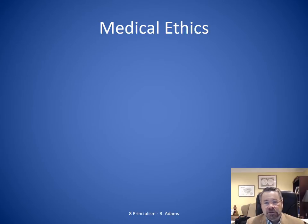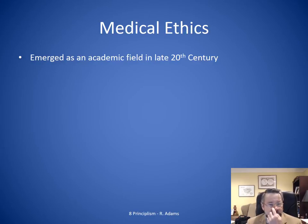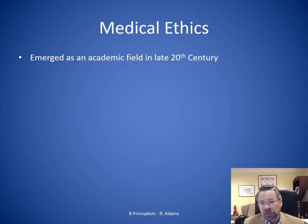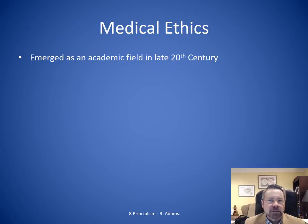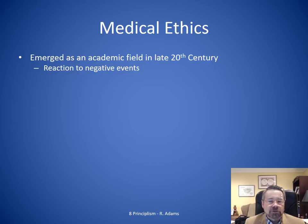Let's talk about medical ethics. This emerged as an academic field late in the 20th century. In the 1970s, John Rawls was starting to write about things. When I was studying in the 1980s, we still didn't have really good names for a lot of the things we talk about today — we called it medical jurisprudence somewhat because we were lawyers looking at it. But it did start to emerge, and it was a reaction to a lot of negative events that had occurred in the early and middle 20th century.